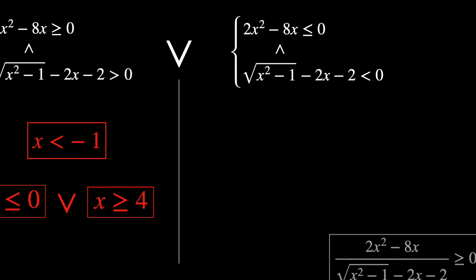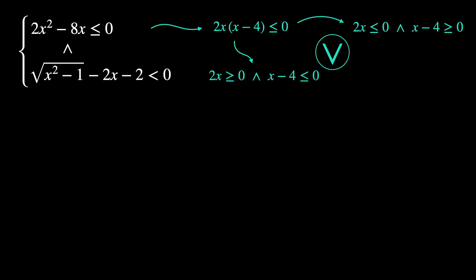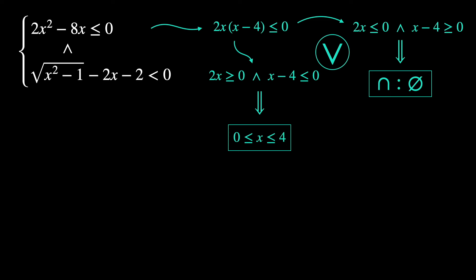Looking at the second system of inequalities, we have 2x(x−4) ≤ 0, which must be split into two cases. First: 2x non-positive and x−4 non-negative — their intersection is empty, so it won't contribute. Second: 2x non-negative and x−4 non-positive — the intersection gives 0 ≤ x ≤ 4.